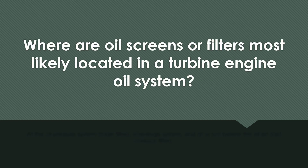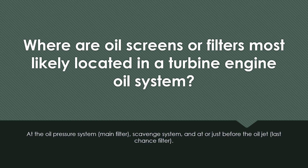Where are oil screens or filters most likely located in a turbine engine oil system? At the oil pressure system main filter, the scavenge system, and at or just before the oil jet — the last-chance filter.